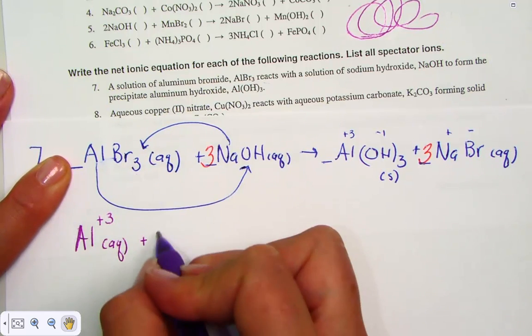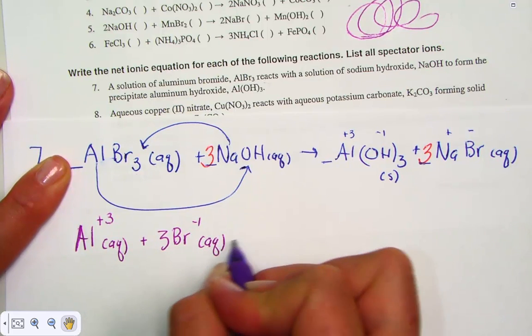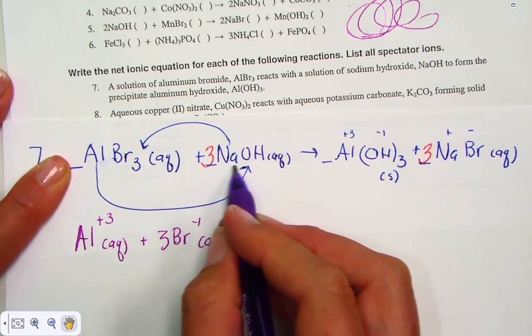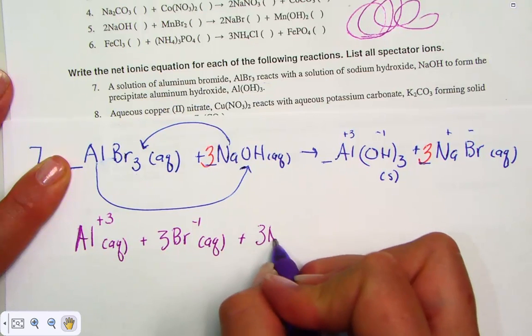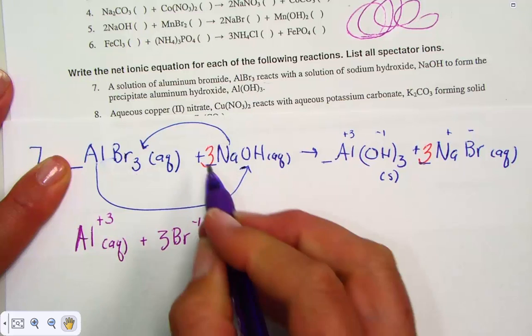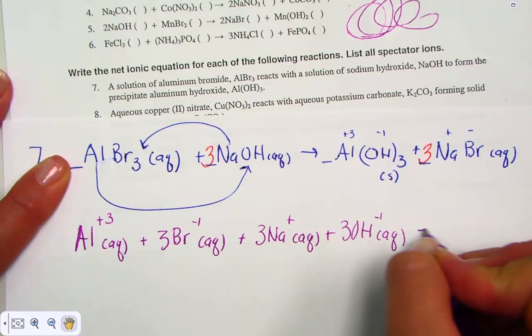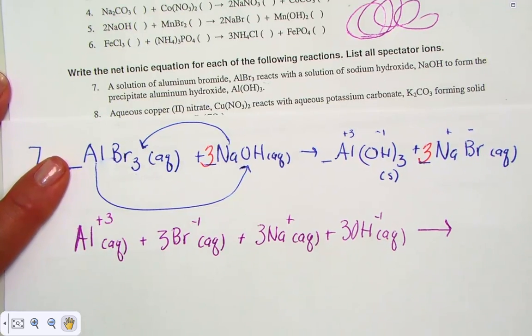There's three bromide ions carrying a minus one, aqueous. Three carries through the sodium hydroxide, so there's three aqueous ions of sodium and three aqueous ions of the polyatomic hydroxide. There's the left-hand side, dissociated.